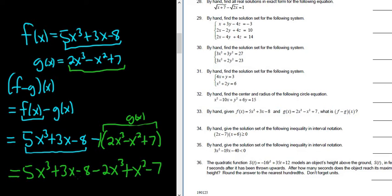It's really easy to mess up here because of the negative 1. This equals 5x³ - 2x³ is 3x³, then we have the 3x (there's no other x terms), then negative 8 minus 7 is negative 15, and then we have the x² term.